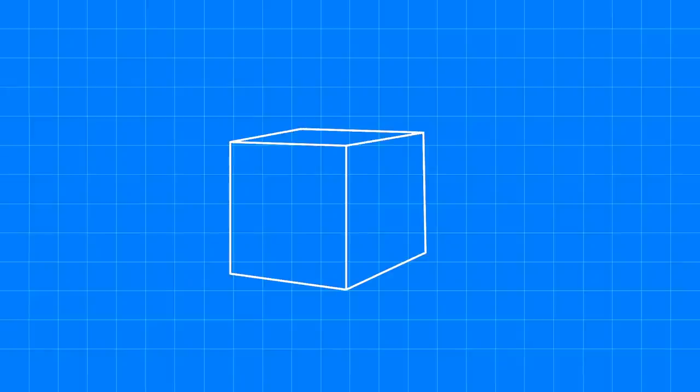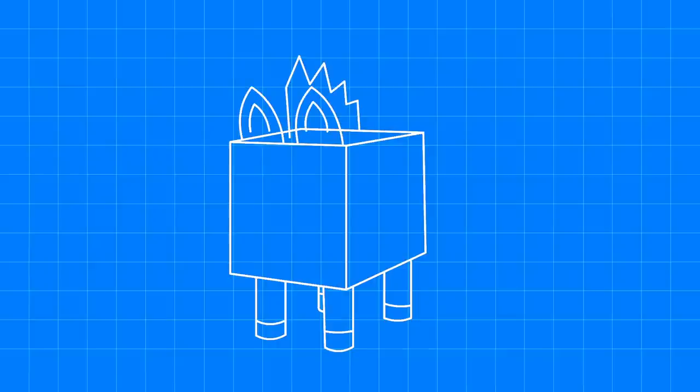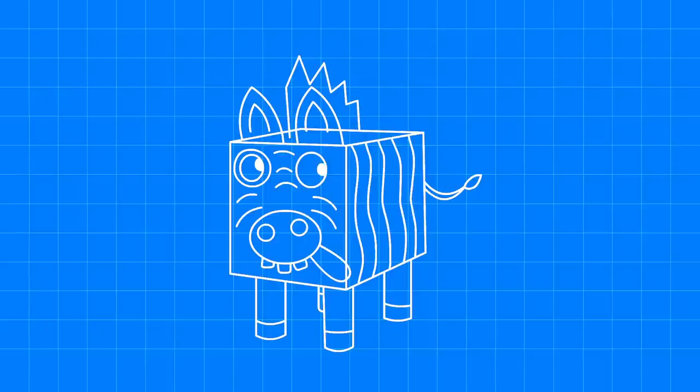Imagine a cardboard box which turns into a zebra. It needs four long legs, big pointy ears, a shiny mane, a tail, eyes, nose, mouth, and of course, stripes.